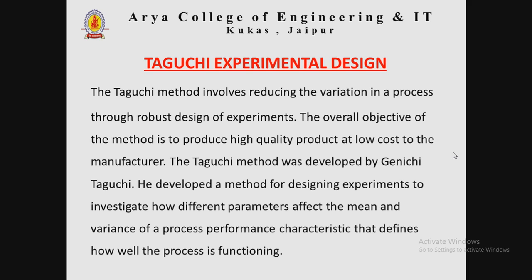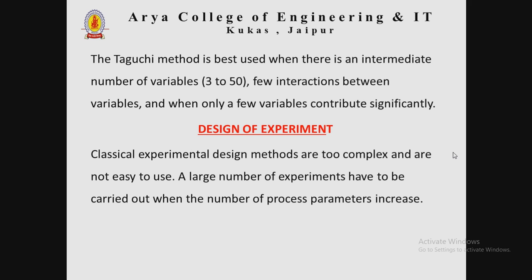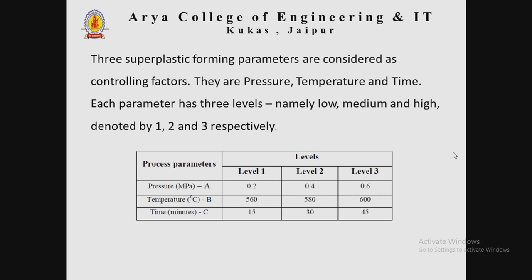Taguchi developed a method for designing experiments to investigate how different parameters affect the mean and variance of a process performance characteristic that defines how well the process is functioning. The Taguchi method is best used when there are an intermediate number of variables (3 to 50), few interactions between variables, and only a few variables contribute significantly. Classical design of experiment methods are too complex when the number of process parameters increases.